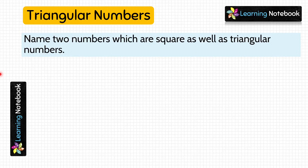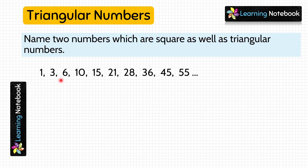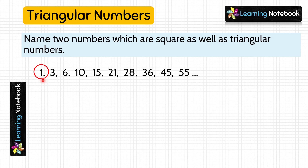The last question is: name two numbers which are square as well as triangular numbers. Let's first write some triangular numbers: 1, 3, 6, 10, 15, and so on. Now look at these numbers and see if any of them is also a square number. Here, 1 is both a square number and a triangular number. So we have found the first such number.